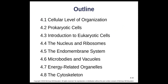What are we going to look at today? We're going to look at how cells are organized. We'll first look at prokaryotic cells — cells that don't have a nucleus and don't have membrane-bound organelles. Then we're going to look at eukaryotic cells, specifically the nucleus and ribosomes, the endomembrane system — which includes the Golgi apparatus and endoplasmic reticulum — then smaller organelles, vacuoles, mitochondria, chloroplasts, and finally the cytoskeleton.